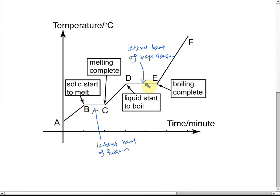Latent heat of fusion and latent heat of vaporization are the thermal energy involved in a change of state of matter — solid to liquid, liquid to gas. From solid to liquid, latent heat is absorbed; from liquid to gas, latent heat is also absorbed. For condensation or solidification, the same amount of heat is involved but the latent heat is released — from gas to liquid and from liquid to solid.